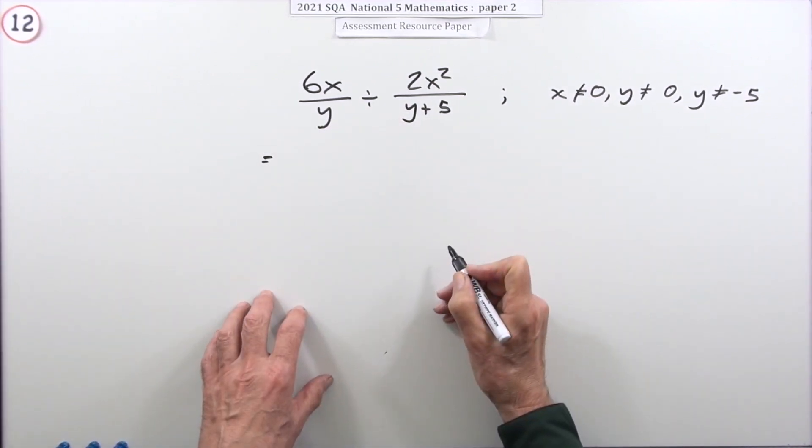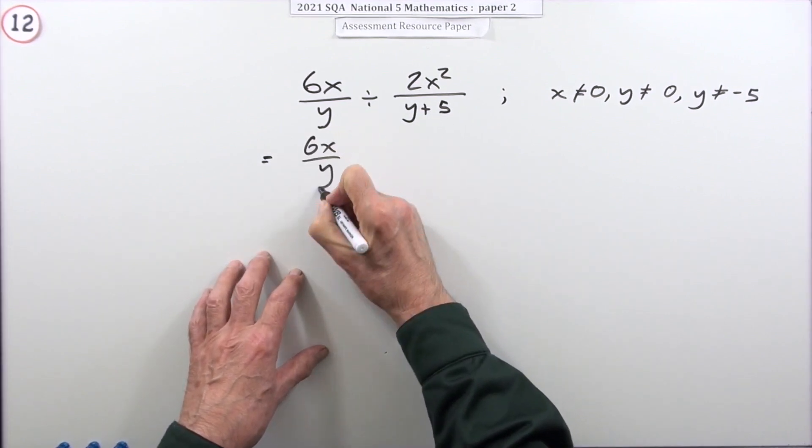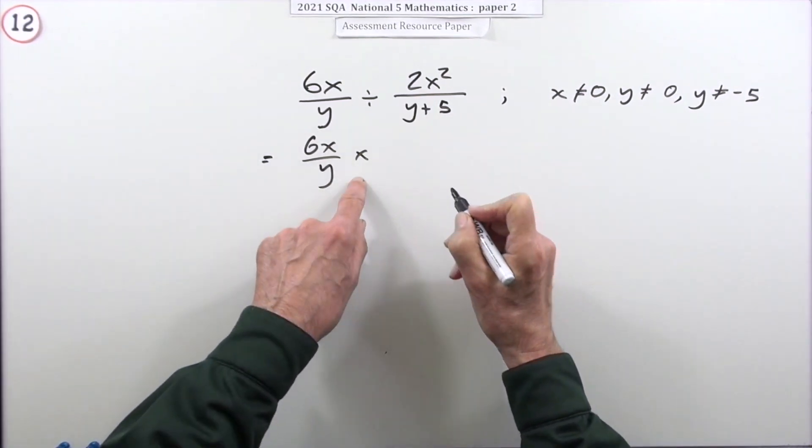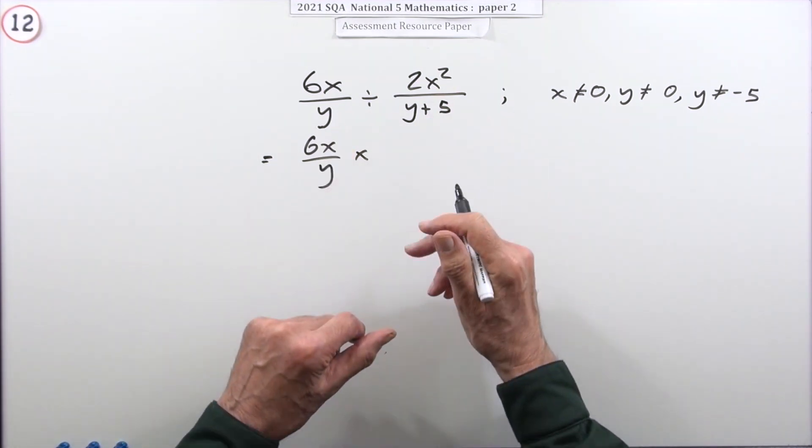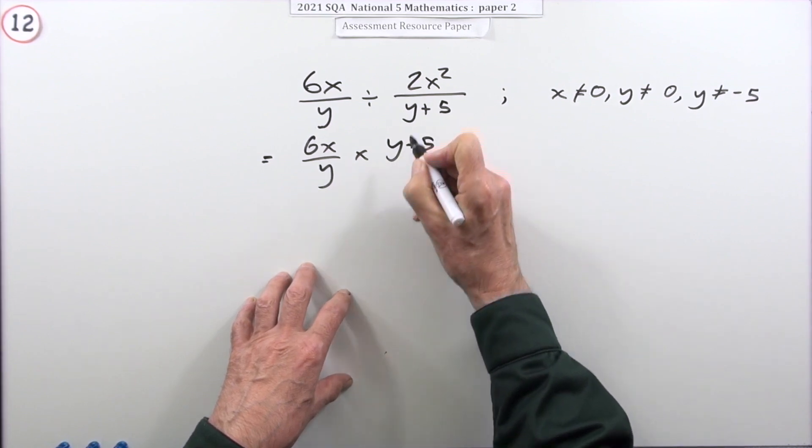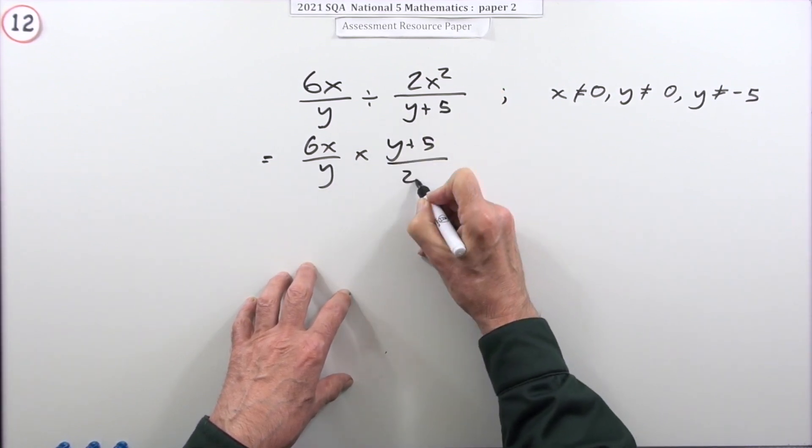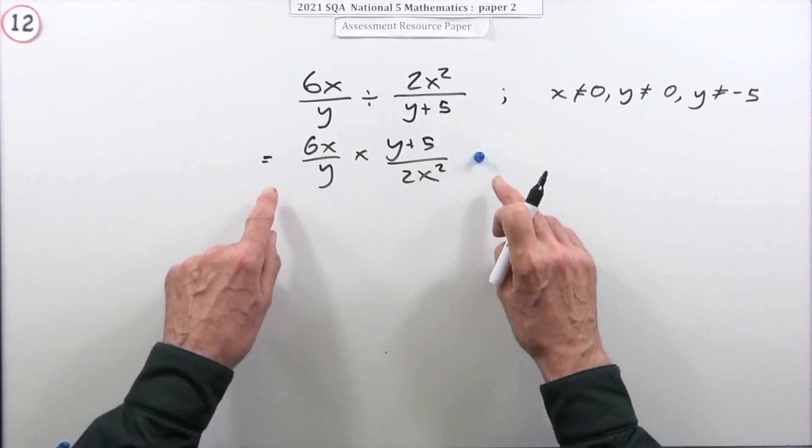Well, what do you do to make it into a single fraction? You carry out the operation, except don't divide—multiply by what's called a multiplicative inverse, that is you turn it upside down, use the reciprocal. So that would be y+5 on top in the numerator and 2x² down below in the denominator. Doing that gets you the first mark.